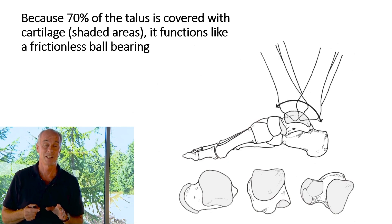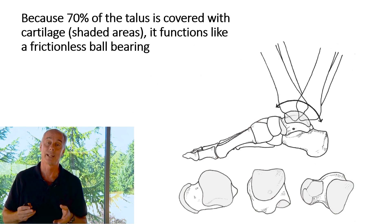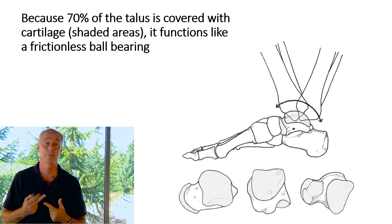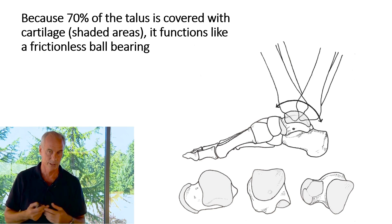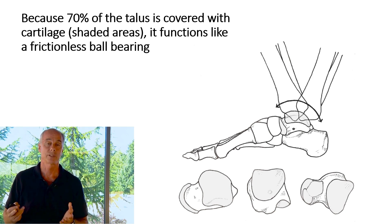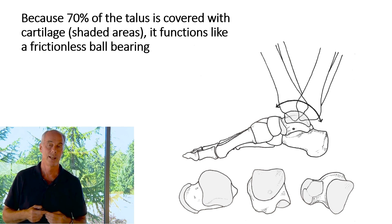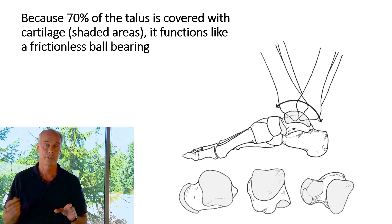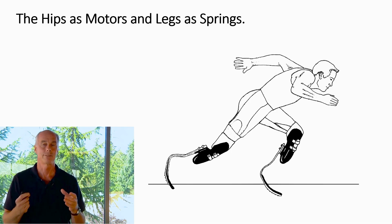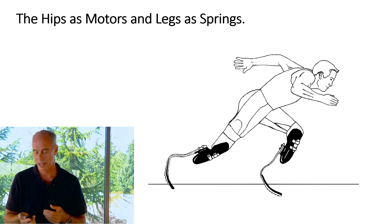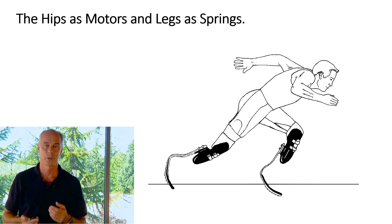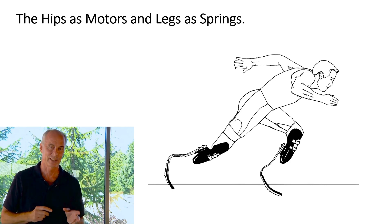The talus is an extremely unusual bone — the bone just under the tibia and fibula. It has no muscles that attach to it, 70% of it is covered with cartilage, and it functions as a frictionless ball bearing. Your lower extremity just slides back and forth over it.